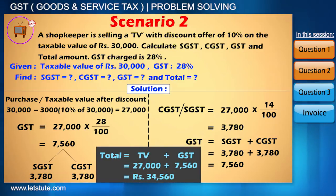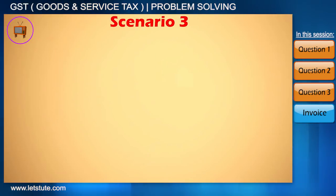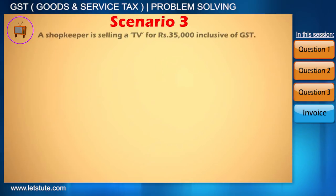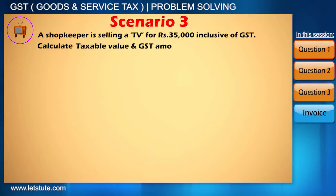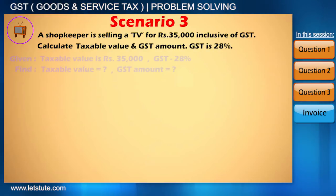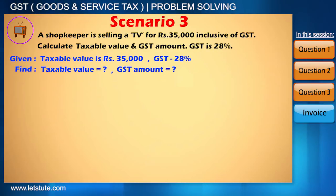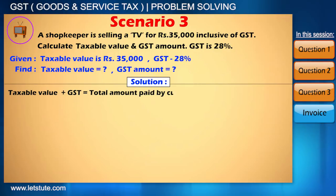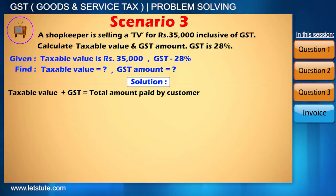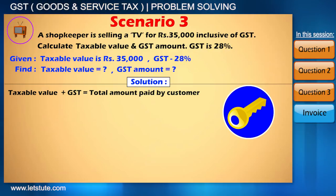There is one more case one can come across: a shopkeeper is selling a TV for Rs 35,000 inclusive of GST. Then how will you find the taxable value and the GST amount? Calculations are very easy if we understand the concept. Can we say that taxable value plus GST equals the total amount paid by the customer? That seems logical — this is the key point, and the rest is just elementary calculations.